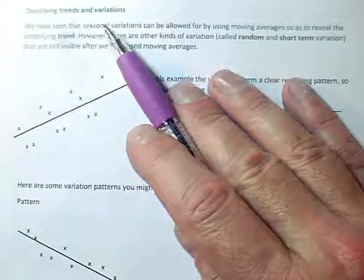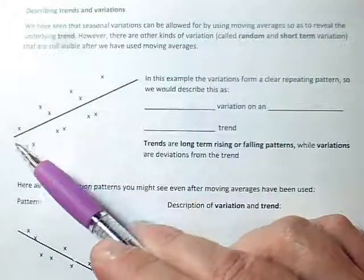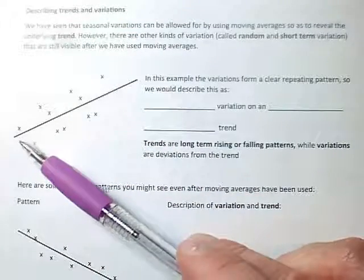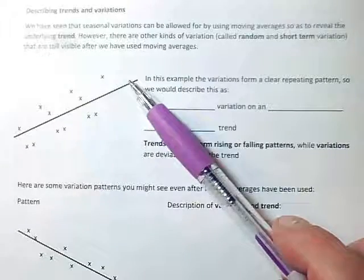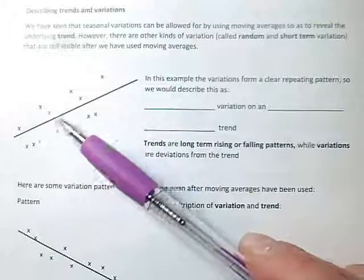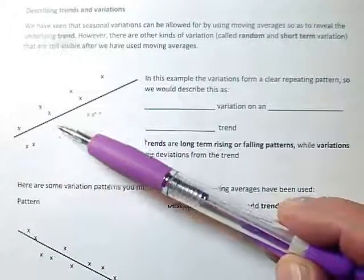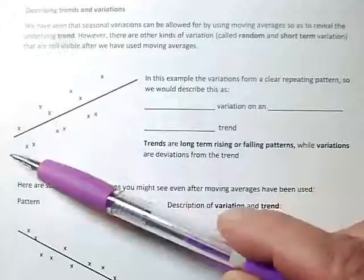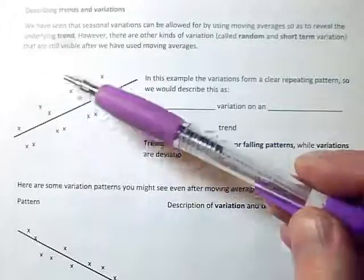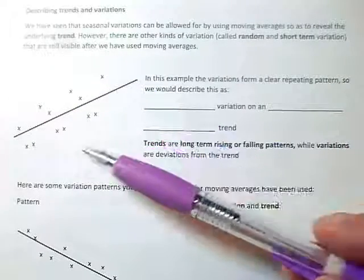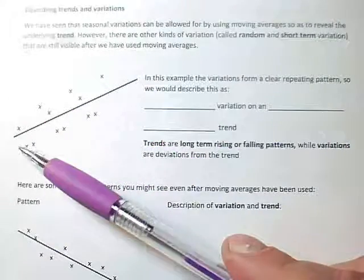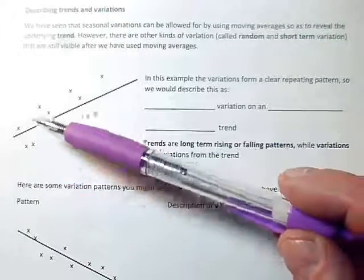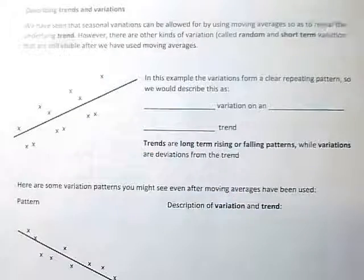The idea behind describing trends and variations is that we have the trend line, so we can see that over the long term values here are rising. Variation describes the pattern that the individual data points fall in. They're obviously going to be either side of the trend line, but what kind of patterns do we see? When you're describing a trend you're talking about the line, when you're talking about variations you're talking about the pattern of X's on either side of the line.